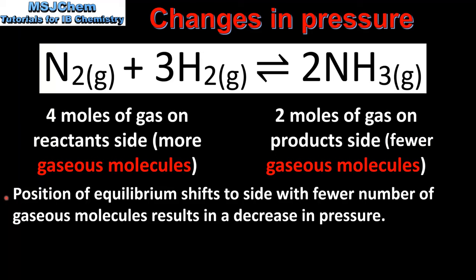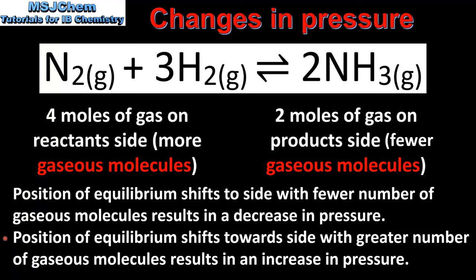When the position of equilibrium shifts to the side with a fewer number of gaseous molecules, this results in a decrease in pressure. And when the position of equilibrium shifts towards the side with a greater number of gaseous molecules, this results in an increase in pressure. So when we make predictions about in which direction the position of equilibrium will shift for changes in pressure, we need to consider the number of gaseous molecules in the reactants and products.